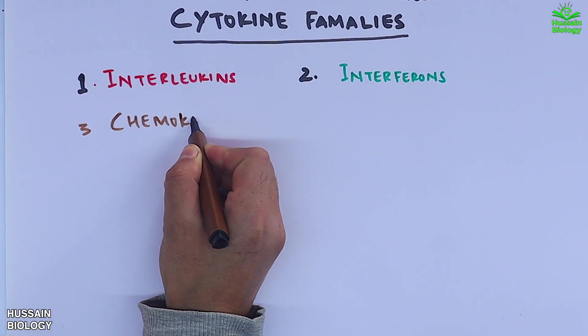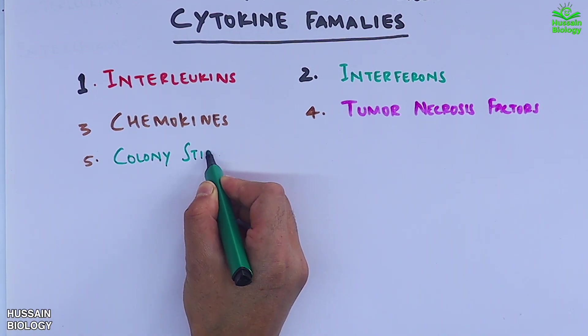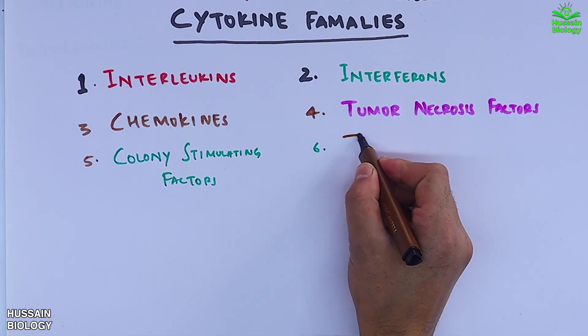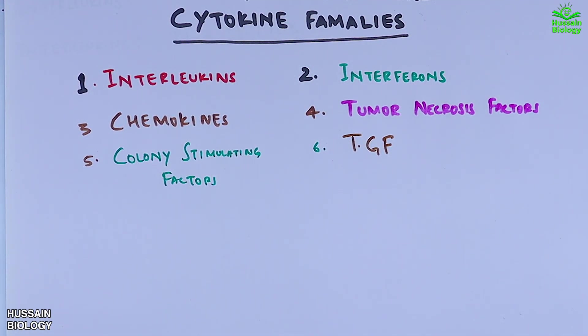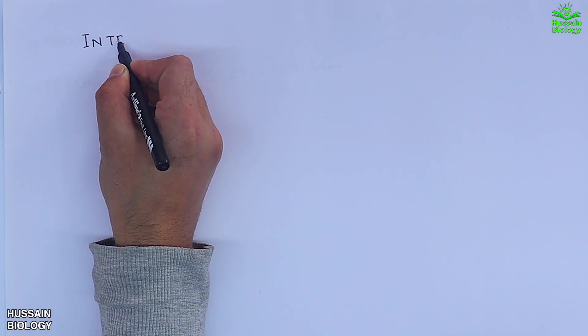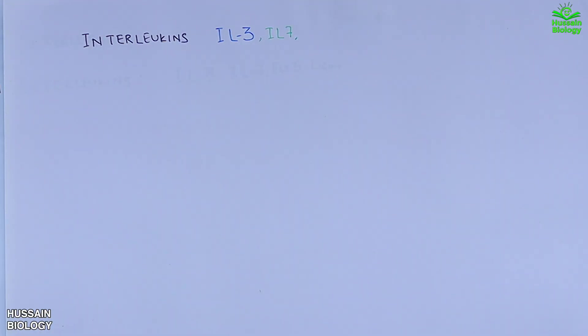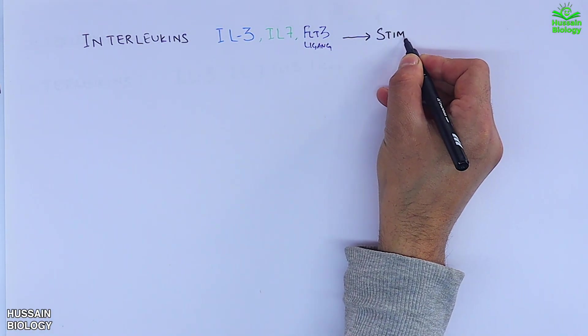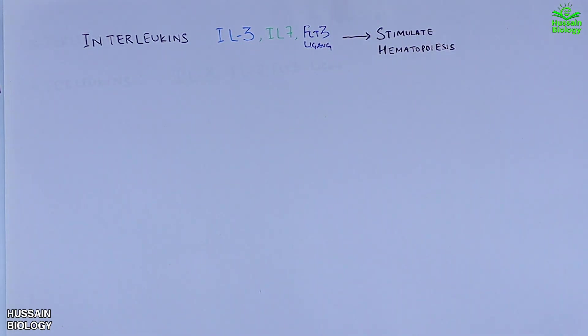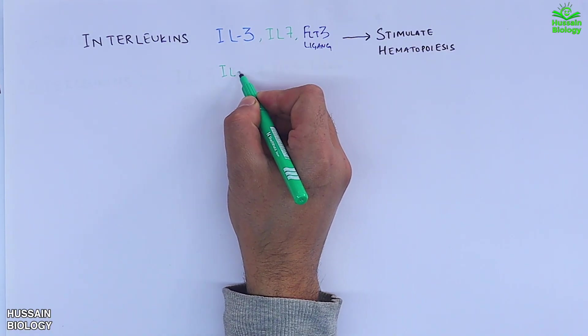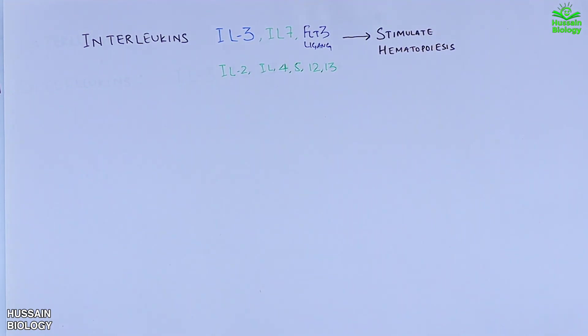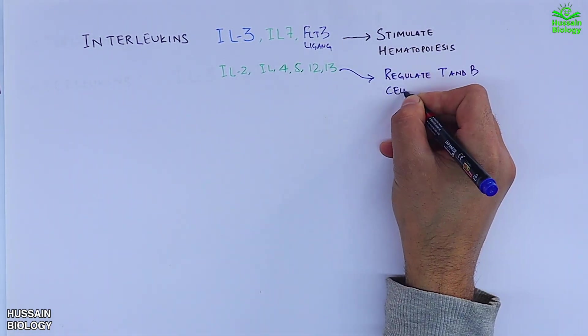Now let's get to the cytokine families. There are six major classes of cytokines: interleukins, interferons, chemokines, tumor necrosis factors, colony stimulating factors, and TGF-beta. Looking at interleukins first — interleukin-3, interleukin-7, and FLT-3 ligand stimulate hematopoiesis, while interleukin-2, -4, -5, -12, and -13 regulate T and B cell cooperation.